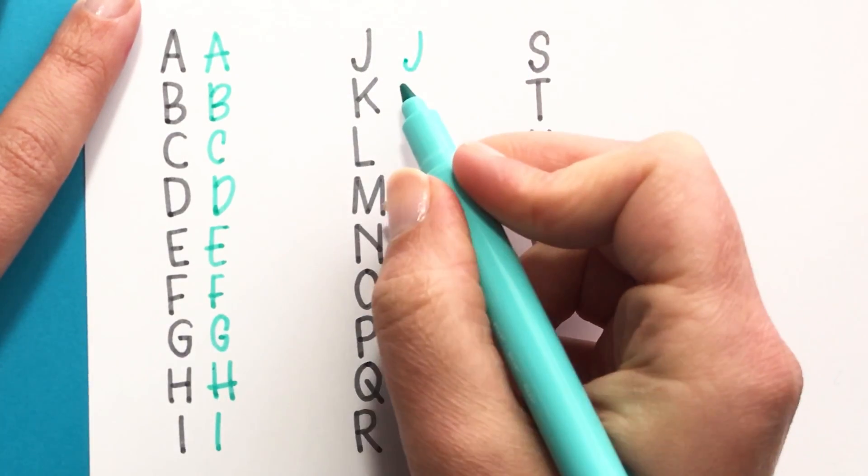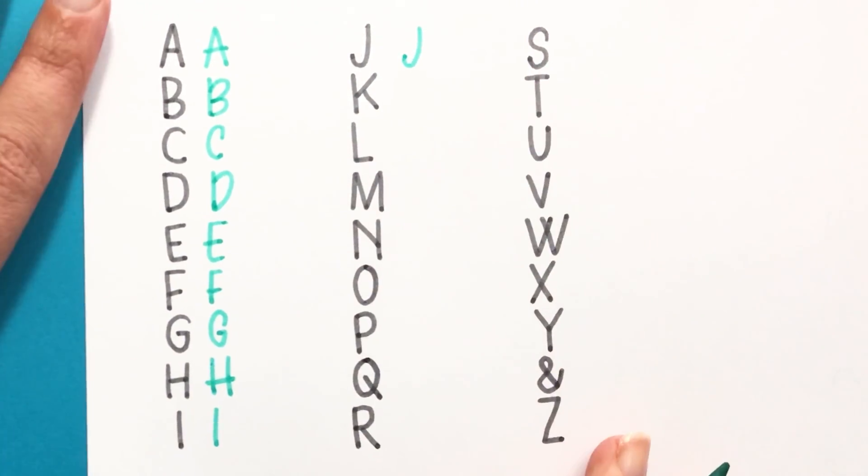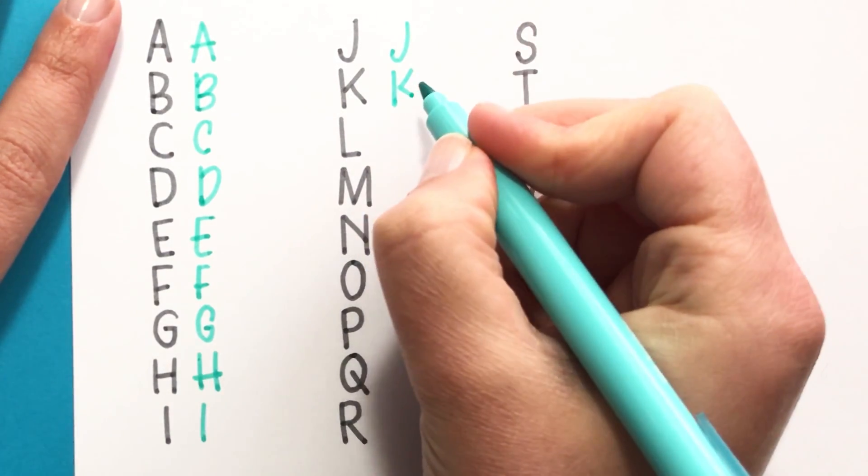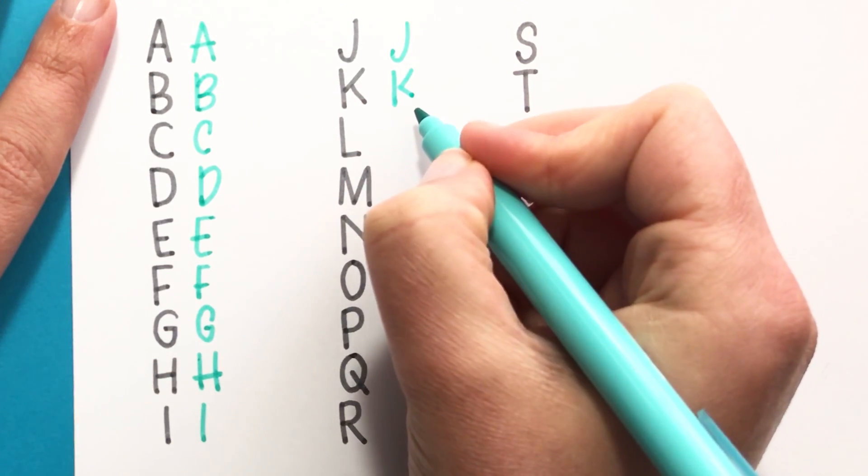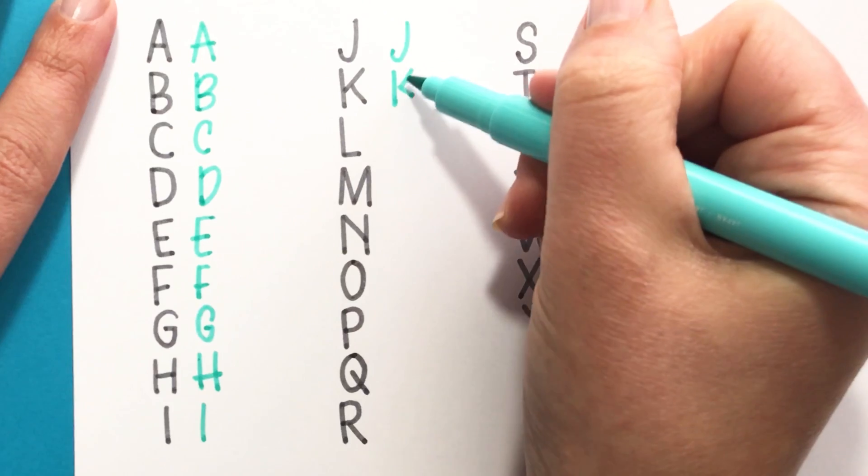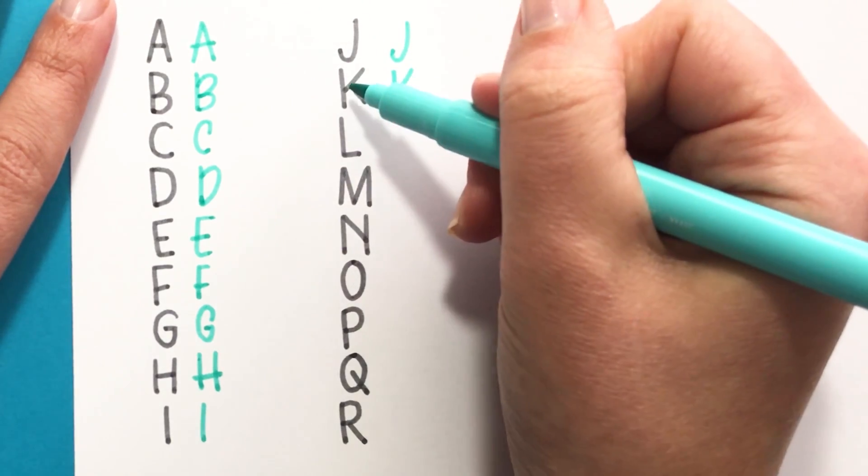So for the J I'm curling that part in more. Now the K I'm just not bringing this leg all the way down to the baseline—I'm keeping it a little bit higher up and then this part is done in one stroke rather than two separate strokes.